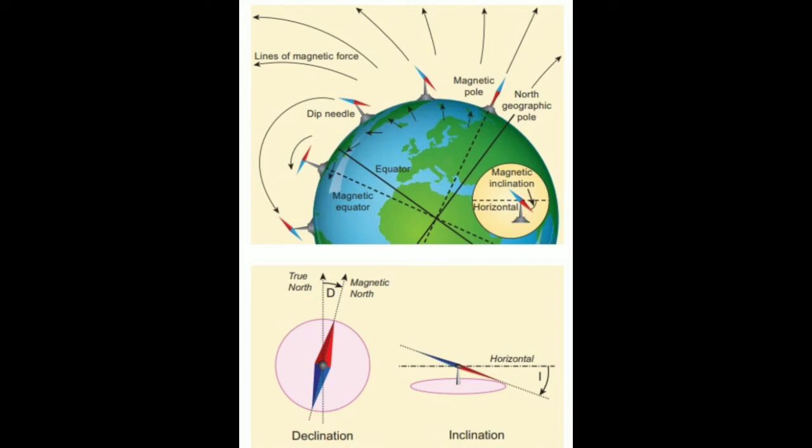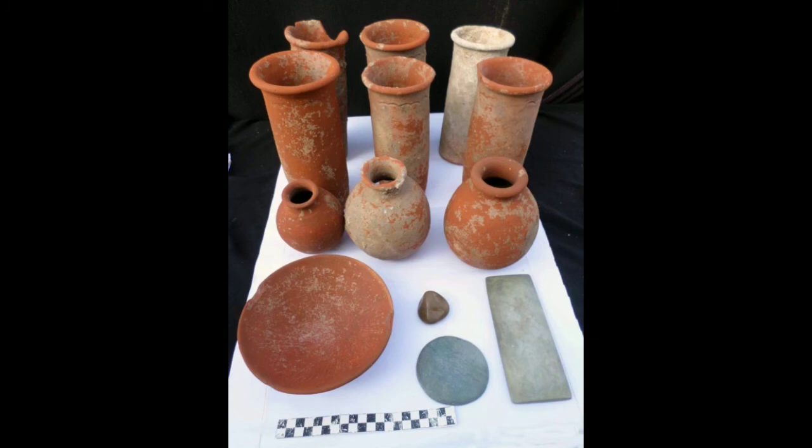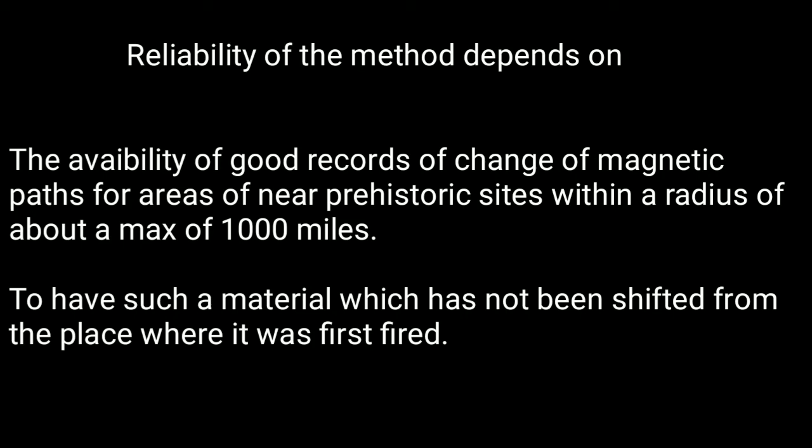Geomagnetic north pole, which guides compass, drifts constantly at the rate of about 600 miles every 100 years. By finding out the path of the earth's magnetic field at the time when the clay sample was fired and by comparing it with the present magnetic direction, the age of the sample in exact number of years can be calculated. Archaeomagnetic dating technique is very valuable for prehistoric anthropology, partly because it gives absolute dates and partly because baked clay is present in most prehistoric sites. The reliability of the method depends on availability of good records of change of magnetic paths for areas near prehistoric sites within a radius of about a maximum of 1000 miles.